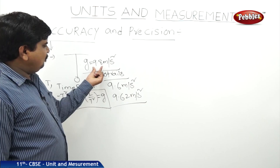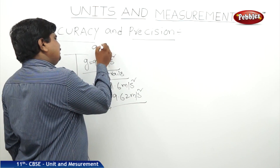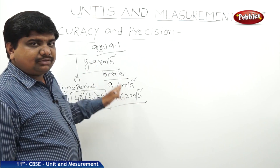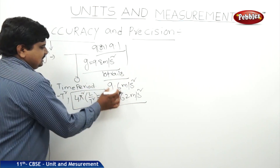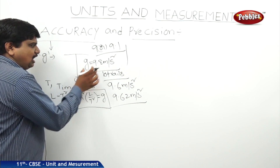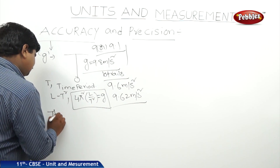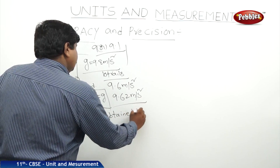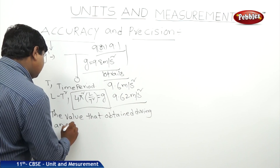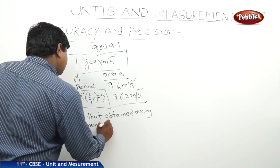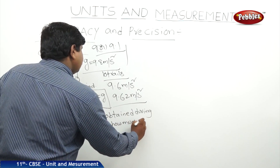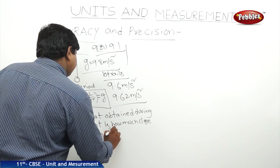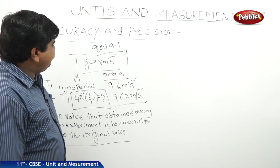This 9.62 is almost very close to 9.8. But suppose the answer were 9 or 9.1 — in that case it would not be acceptable. So what we understand is: the value obtained in the experiment, how close it is to the original, is called the accuracy of the experiment.